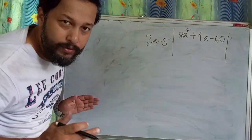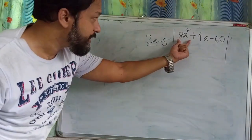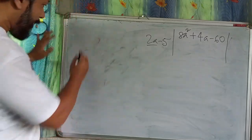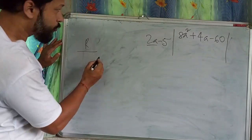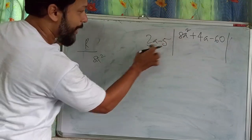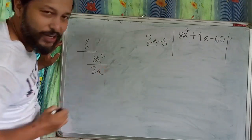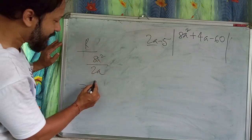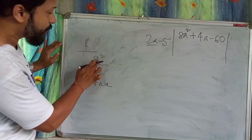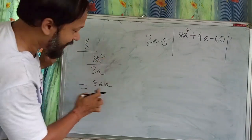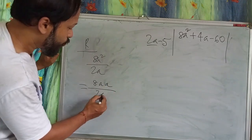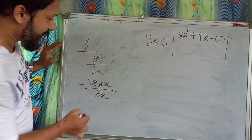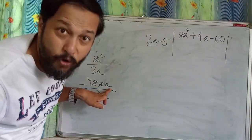First of all, as we saw before, we take first term by first term. That is 8a² by 2a, done in rough. I can write 8a² as 8×a×a divided by 2a. So 2 fours are 8, a×a cancel — I get 4a. We write 4a as the first quotient term.